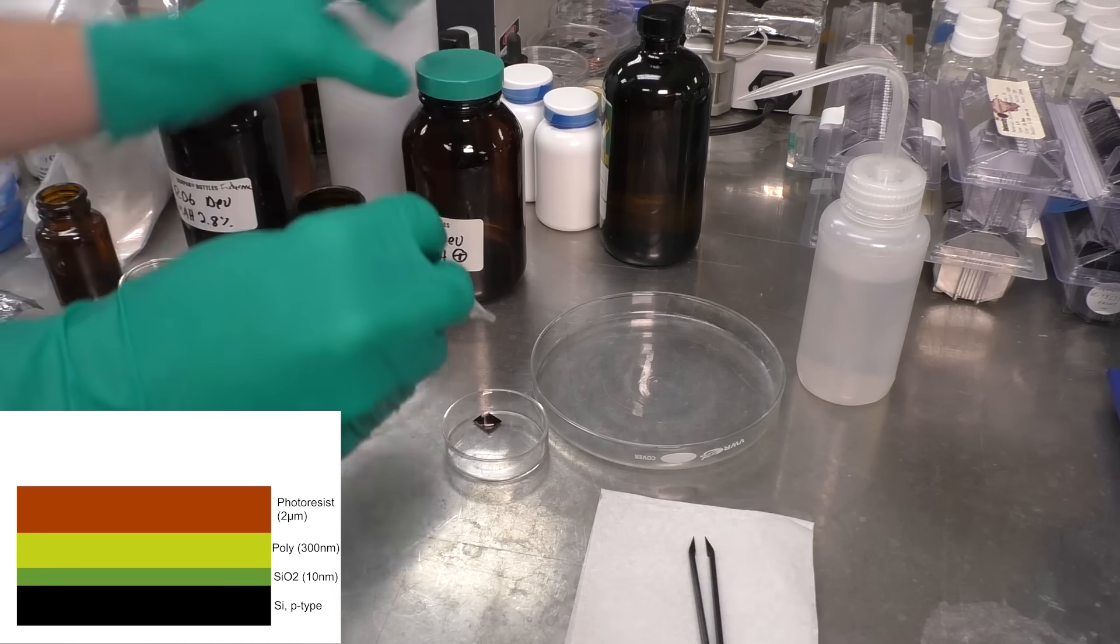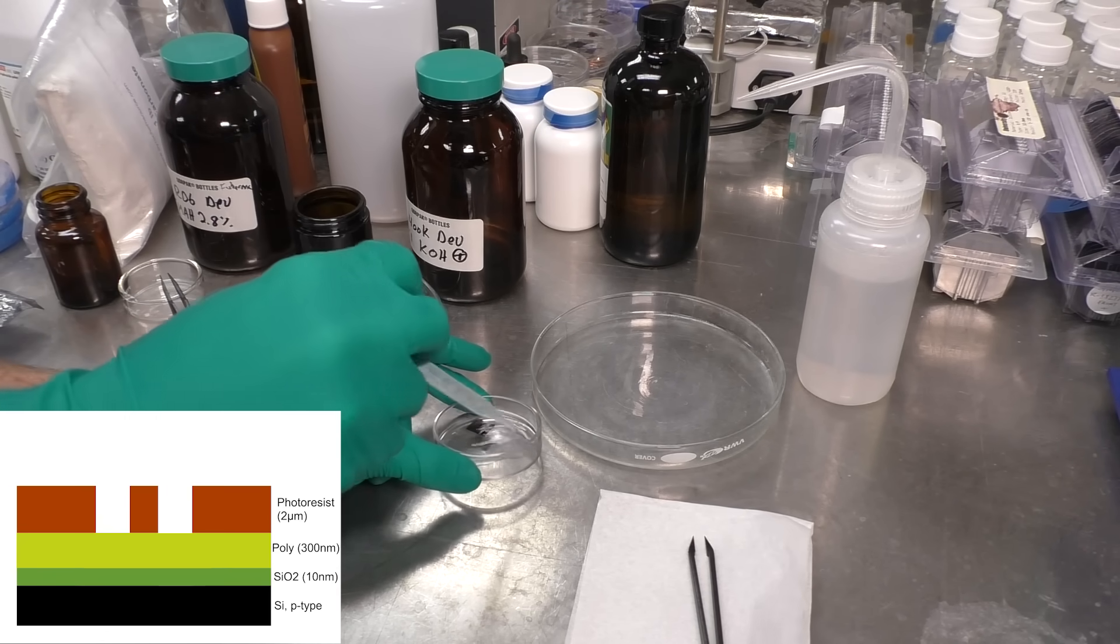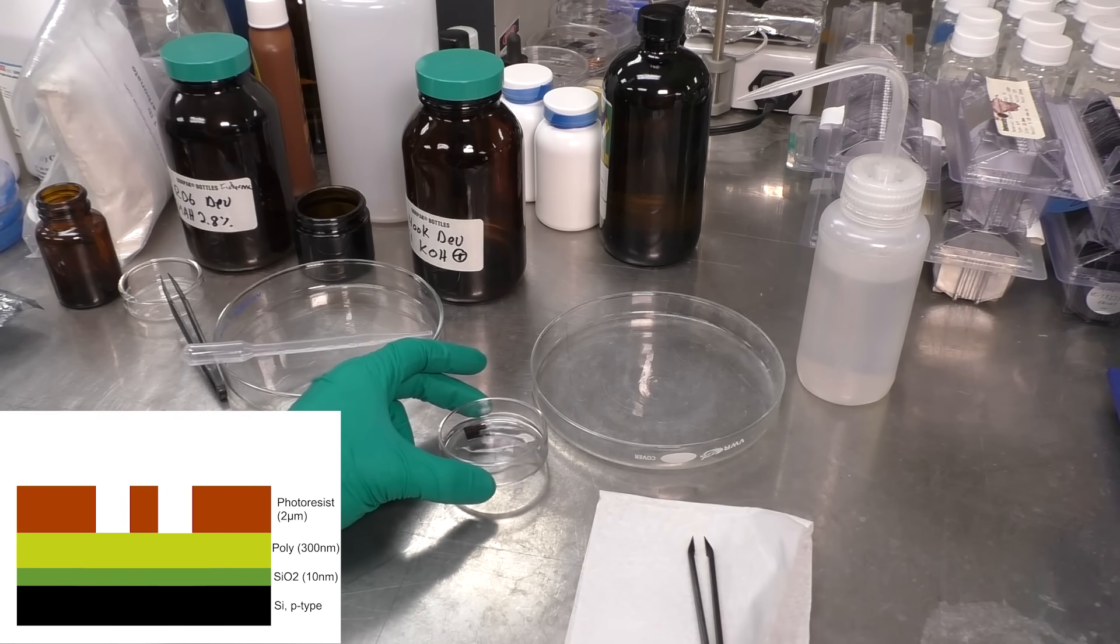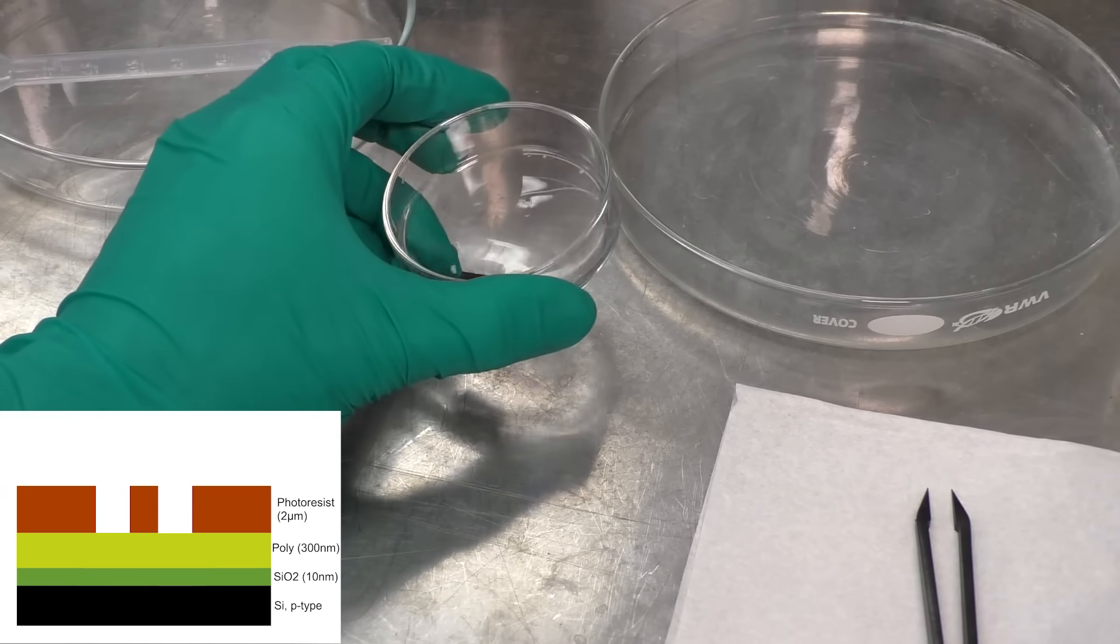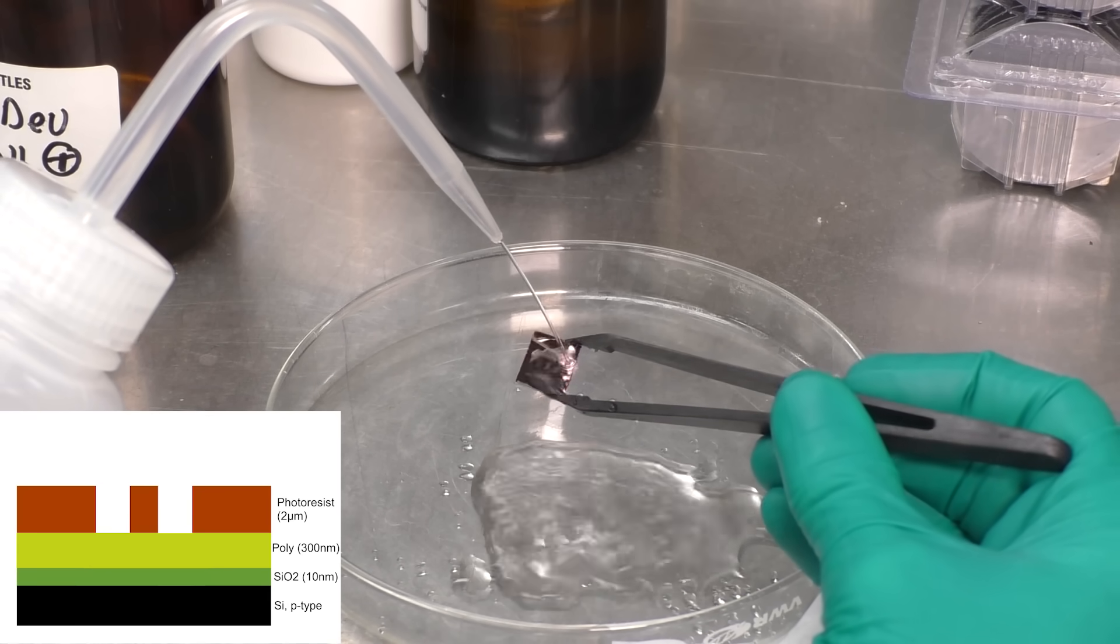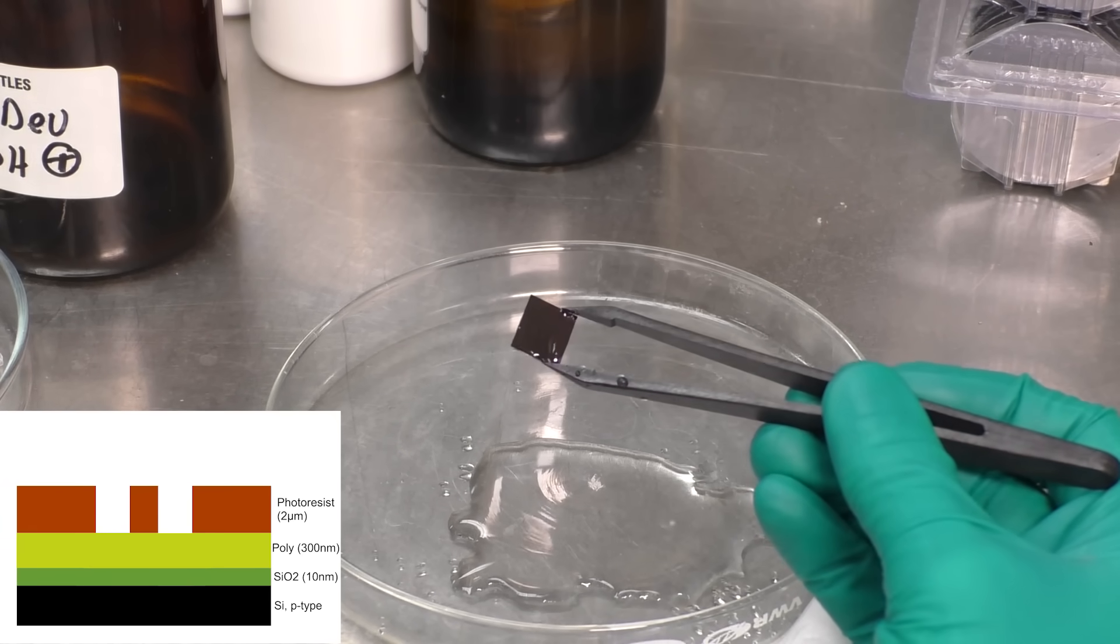Just like processing film in a dark room, the next step is development. I put it in a couple percent potassium hydroxide solution for about a minute, and this etches away the parts of the photoresist that were exposed, because it's a positive photoresist. I wash it with water to get rid of the residual developer, and then we're ready to do the next step.